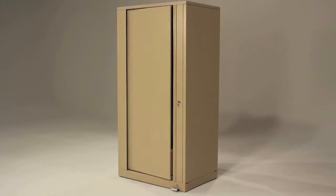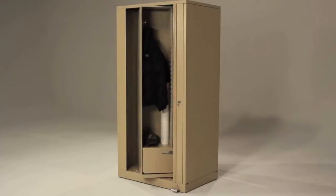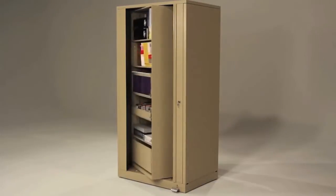A single Times 2 can hold as much as three regular lateral files in far less space. With double the depth of lateral files, Times 2 can store more of everything. It rotates for fast access from either side and locks to secure all your stuff.